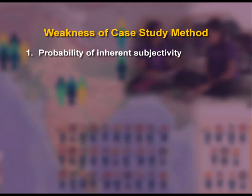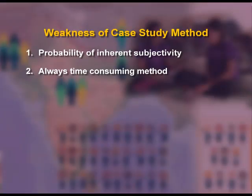Weaknesses of case study method: First, probability of inherent subjectivity — case study can be stereotyped as a weak sibling among social science methods. The investigator is often found to deviate from academic discipline, leading to insufficient precision, objectivity, and rigorous investigation. Second, it is always a time-consuming method — it takes time to include different research methods in order to get an inclusive case study.